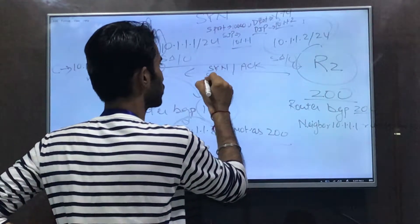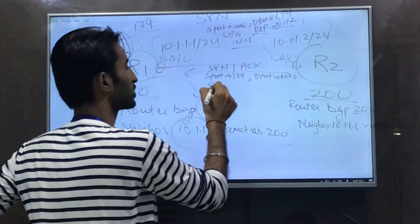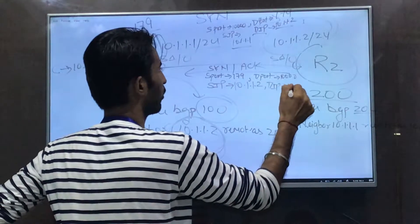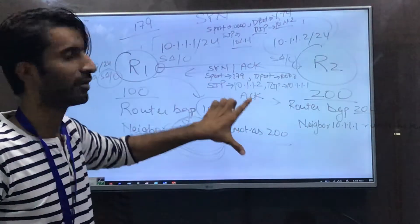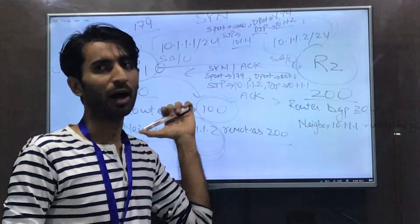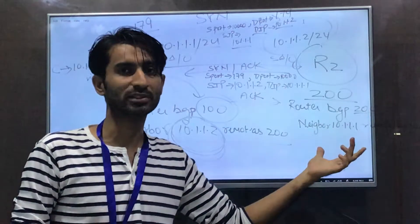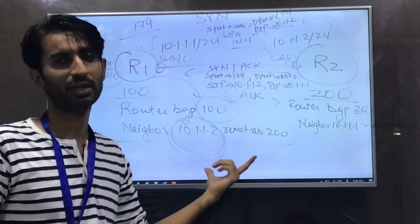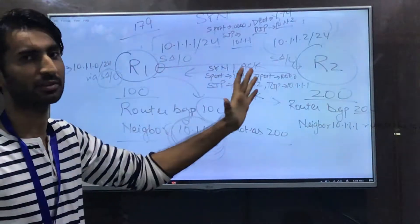In the SYN-ACK, the source port is 179, destination port is 10,000, source IP is 10.1.1.2, and destination IP is 10.1.1.1. R1 then sends an ACK, completing the three-way handshake. After that, the routers exchange capabilities such as route refresh, then exchange BGP UPDATE messages and keepalives. Finally, a syslog message appears confirming the BGP adjacency is up.